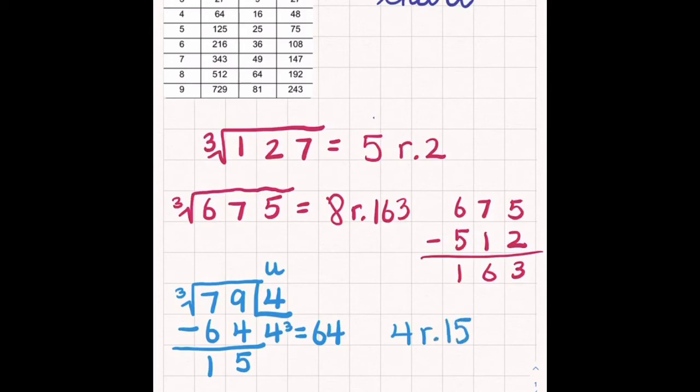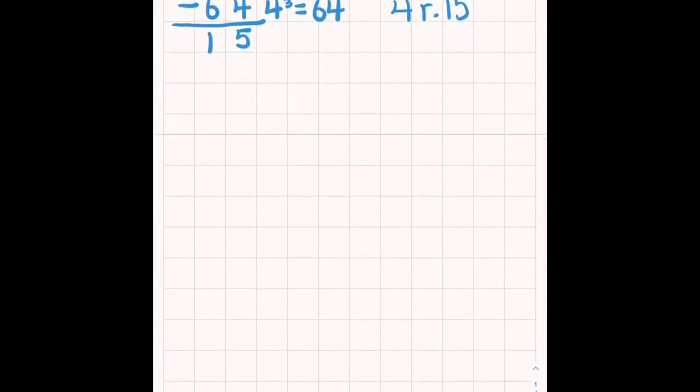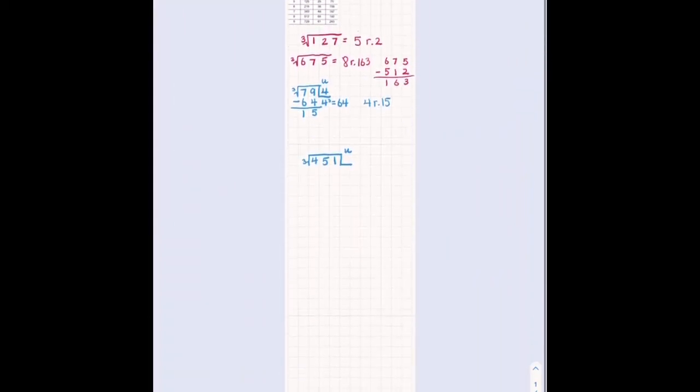Well, let's try a three digit number. And remember, we're still using the chart, so keep it handy. So I want to find the cube root of 451. And since this is a three digit number, I know that my answer will still only be one number. So it will be a unit. So let's see. Let's go back to my chart.